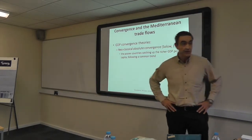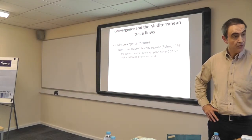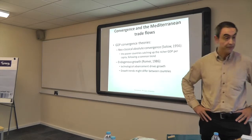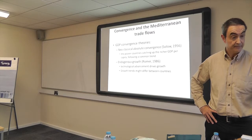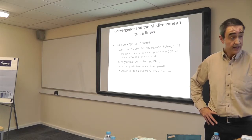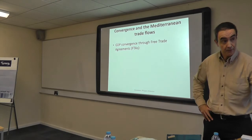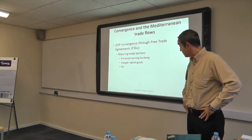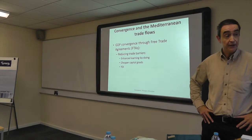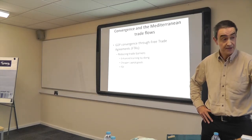Starting with the GDP convergence theories, the two schools are the absolute convergence school and endogenous growth. In the first case, we have the same absolute convergence for everybody, and then we have differentiation between the countries. This is about per capita GDPs. What would be the room for free trade agreements to bring about convergence between economies — by learning by doing, procuring cheaper capital goods, or by direct foreign investment.